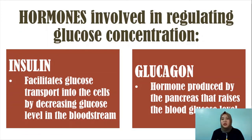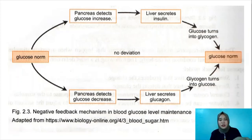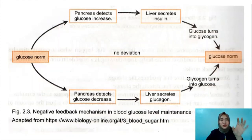Insulin is a hormone that decreases glucose level in the bloodstream — it facilitates glucose transport into the cells by decreasing blood glucose levels. Glucagon has the opposite function — it increases or raises blood glucose levels. The body needs to achieve the normal glucose concentration so that cells, tissues, and organs can function properly. What happens if the body detects that glucose concentration is higher than normal — for example, if you eat too many carbohydrates?